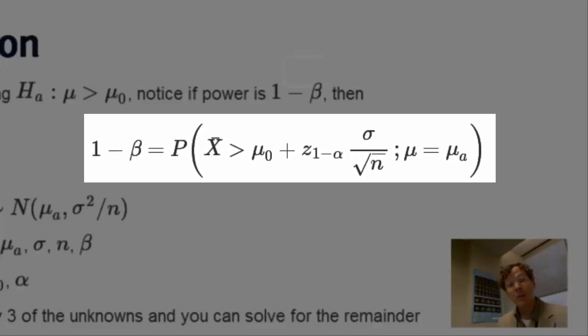Our power is equal to the probability that X bar is larger than mu naught plus the standard normal quantile times the standard error, where this probability is calculated under the hypothesis that mu equals mu a.